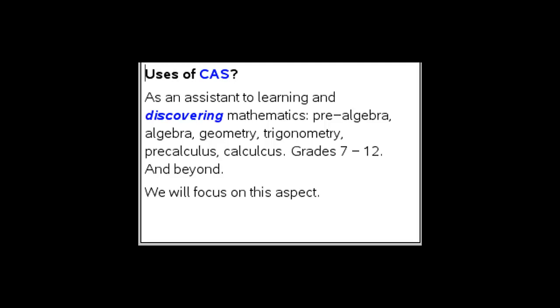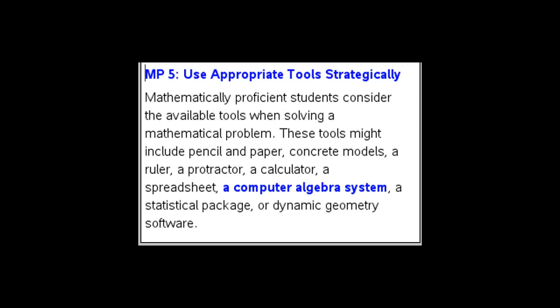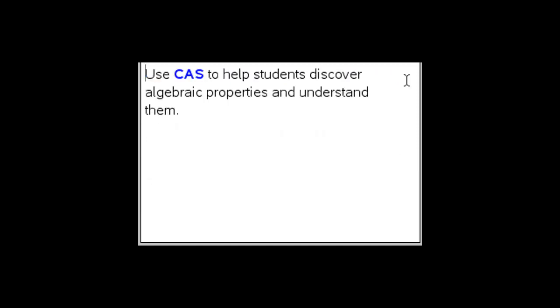Math practice 5, that says use appropriate tools strategically, says mathematically proficient students consider the available tools when solving a mathematical problem. These tools might include a computer algebra system among other things. Let's look at how CAS can be used to help students discover algebraic properties and understand them.